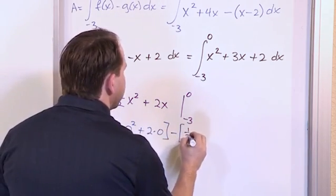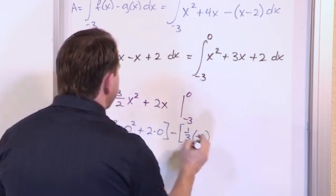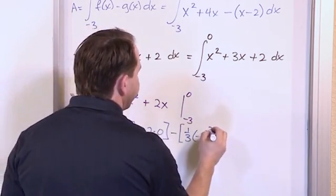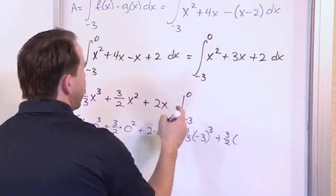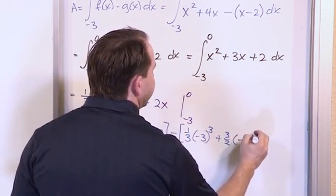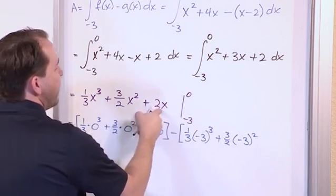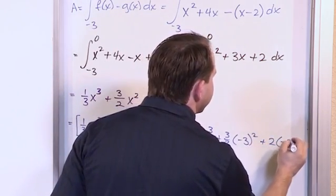Then you have 1 third from here. You have negative 3 cubed. And you have plus 3 halves. And then you have negative 3 squared. And you have plus 2 times negative 3.